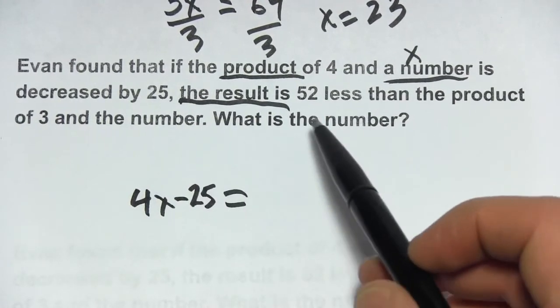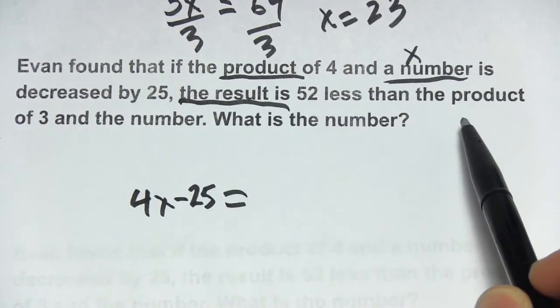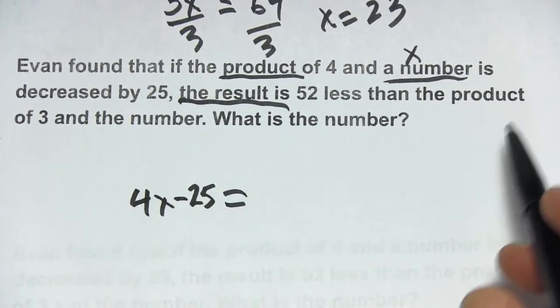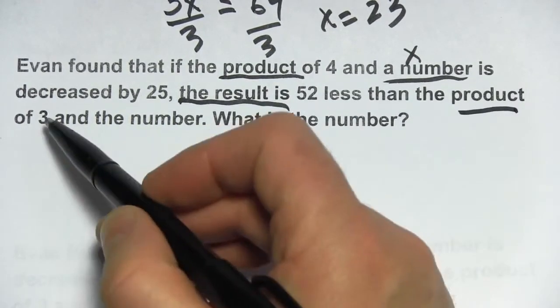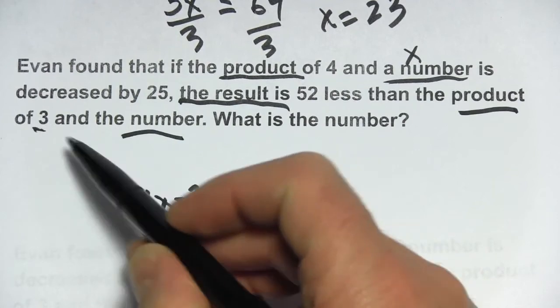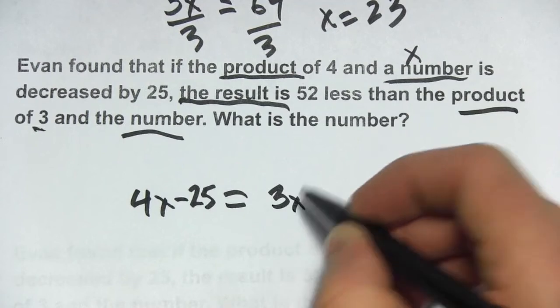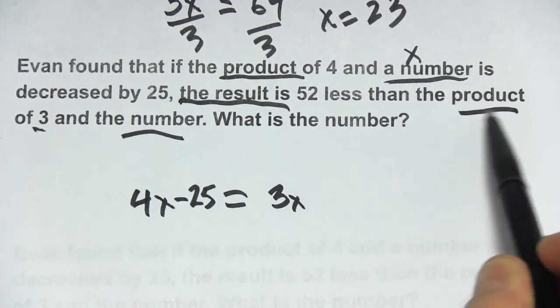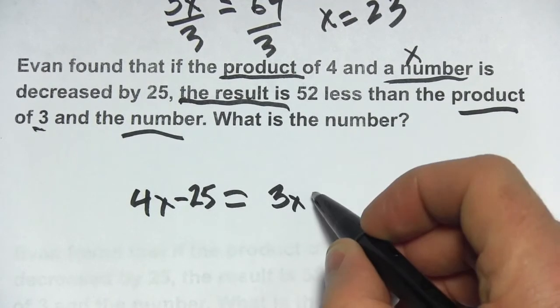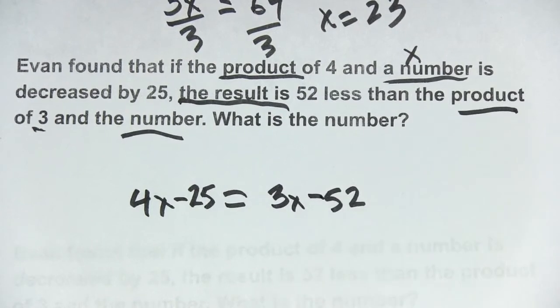Let's work on the right now. The result is 52 less than the product of 3 and the number. Okay, we've got another product here, 3 and the number. The number is x. So the product of 3 and the number is just 3 times x or 3x. But we want 52 less than that product, so we just need to subtract 52.